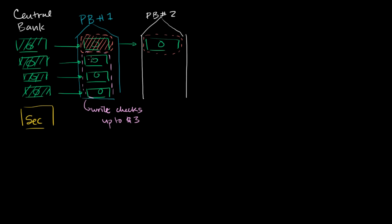Out of the $3 checking account, the bank says this is a demand deposit and they must keep some reserves — this is a fractional reserve system. In the US you could lend out up to 90%, but maybe this bank is more conservative and only lends out 2 out of the $3. The person they lend to also happens to deposit it in private bank number 2, so those $2 also end up there. The original person can still write checks up to $3.